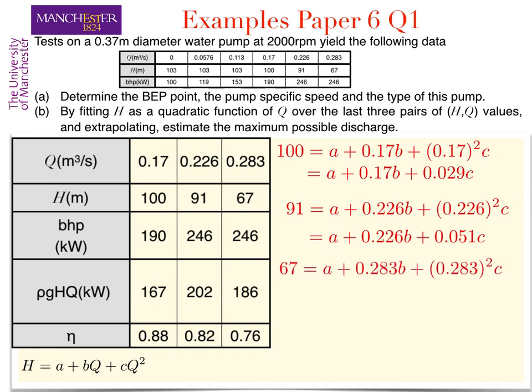Finally for a flow rate of 0.283 cubic meters per second we have a head of 67 meters, and thus 67 is a plus 0.283b plus 0.283 squared c or a plus 0.283b plus 0.080c.